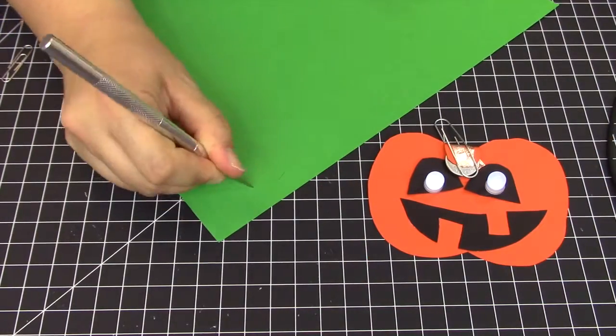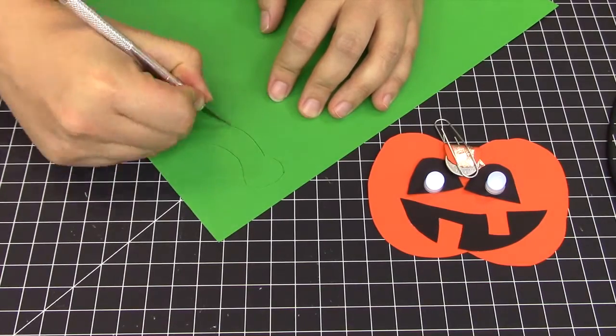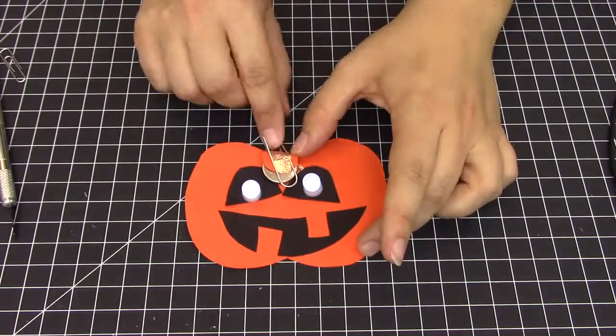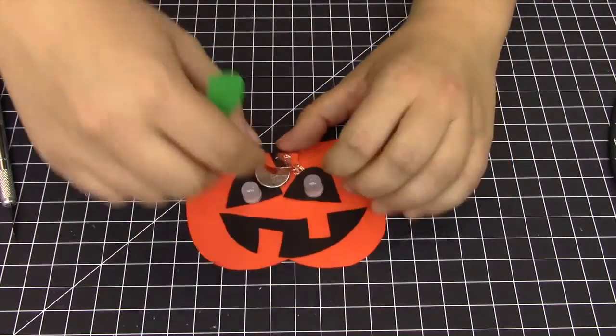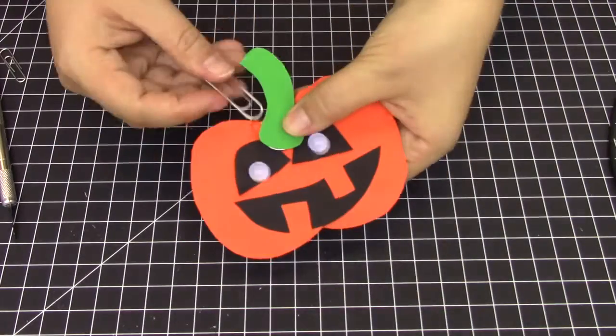And finally we cut the stem out of green construction paper. Place the bottom of your stem over the battery and then use the paper clip to hold everything in place.